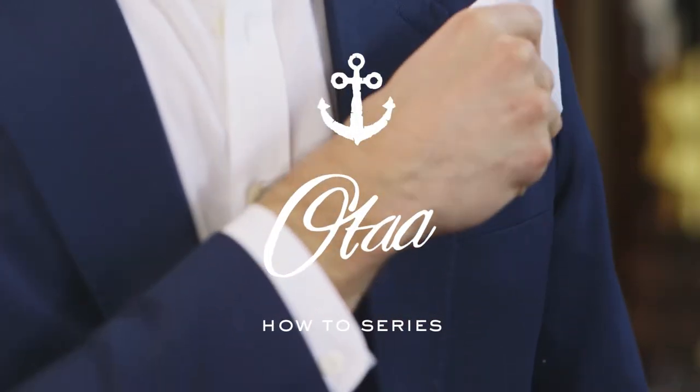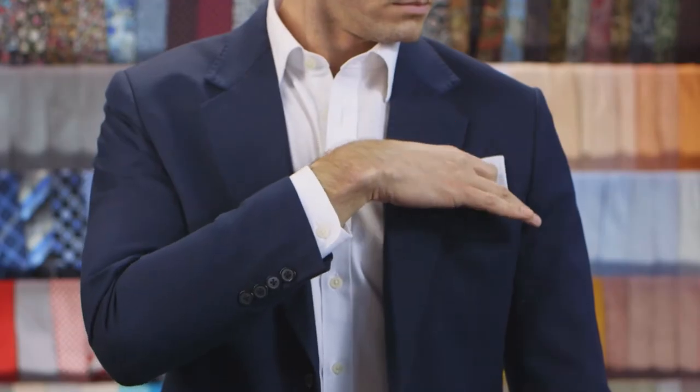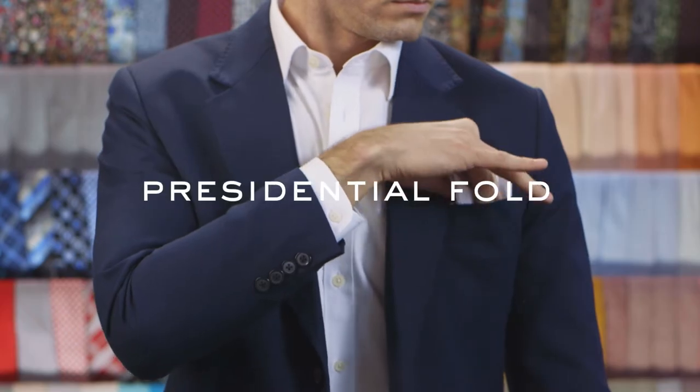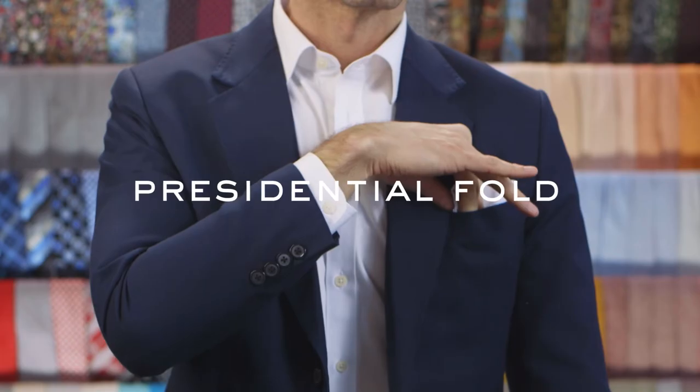The Presidential Fold is sharp and rectangular. If you're a cinema regular, you have recognized it on the suits of James Bond and Tom Buchanan.